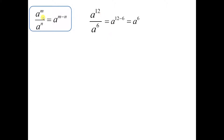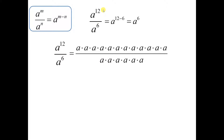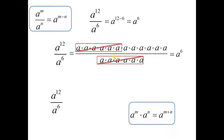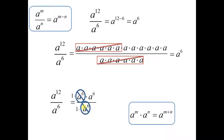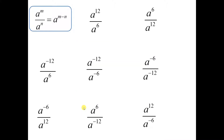Expression 1: a to the 12th divided by a to the 6th. Using this shortcut, it would be 12 minus 6 — the numerator's exponent minus the denominator's exponent — which is 6, giving us a to the 6th. You could also write out 12 a's in the numerator and 6 in the denominator; those reduce to give 1 times a to the 6th. Or you could break a to the 12th into a to the 6th times a to the 6th, which then reduces with the denominator, leaving a to the 6th. So our first answer is a to the 6th.